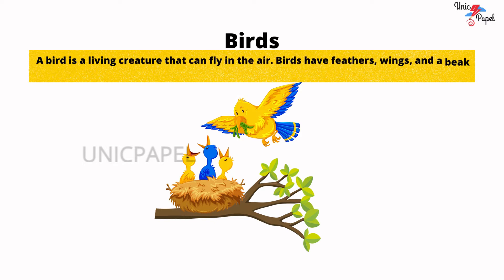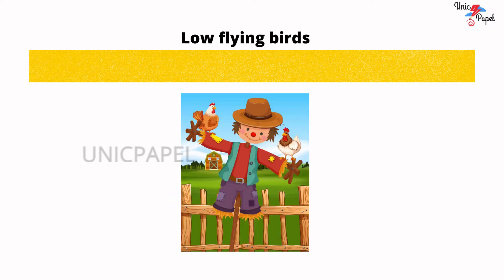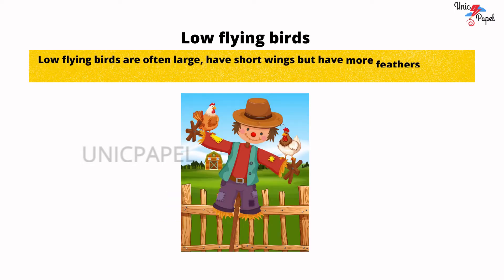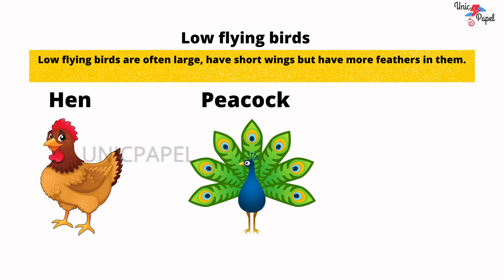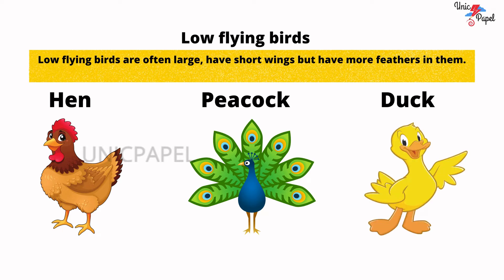Birds. A bird is a living creature that can fly in the air. Birds have feathers, wings, and a beak, but do not have teeth. Low-flying birds are often large, have short wings, but have more feathers. Example: hen, peacock, duck, and many more.